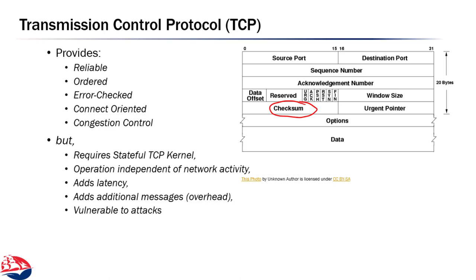To do all of this, the TCP protocol requires a stateful TCP kernel. This is often implemented inside an operating system, but it doesn't have to be. For example, in embedded systems we could theoretically run an embedded TCP stack. Somewhere, something needs to keep track of what state this connection is in. It also needs to operate independently of network activity, so typically the TCP protocol requires some use of timers.